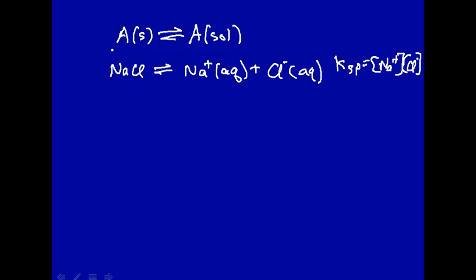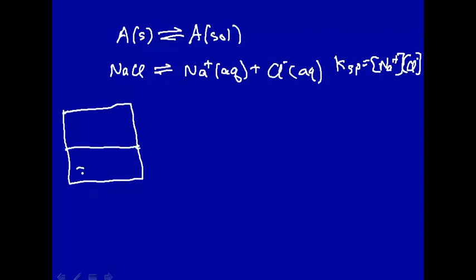But let's generally take something that doesn't dissociate into ions, but just sits there as a solid and then goes into a liquid. We can use our usual picture: down here we have the solid A, and up here we have a solvent. What A is going to do is equilibrate between the solid and the solvent. This is the equilibrium we're looking at — we're not worrying about dissociation.